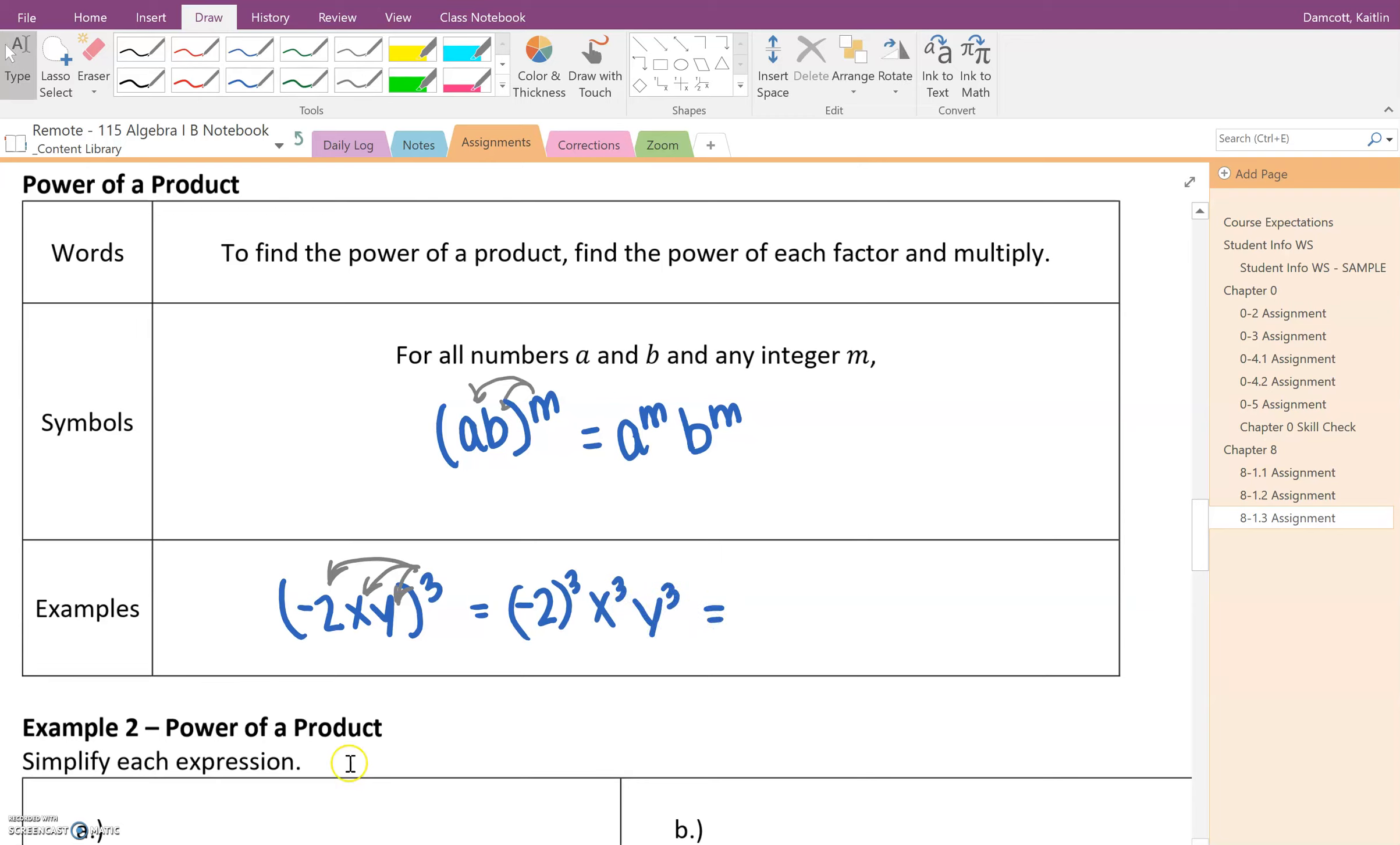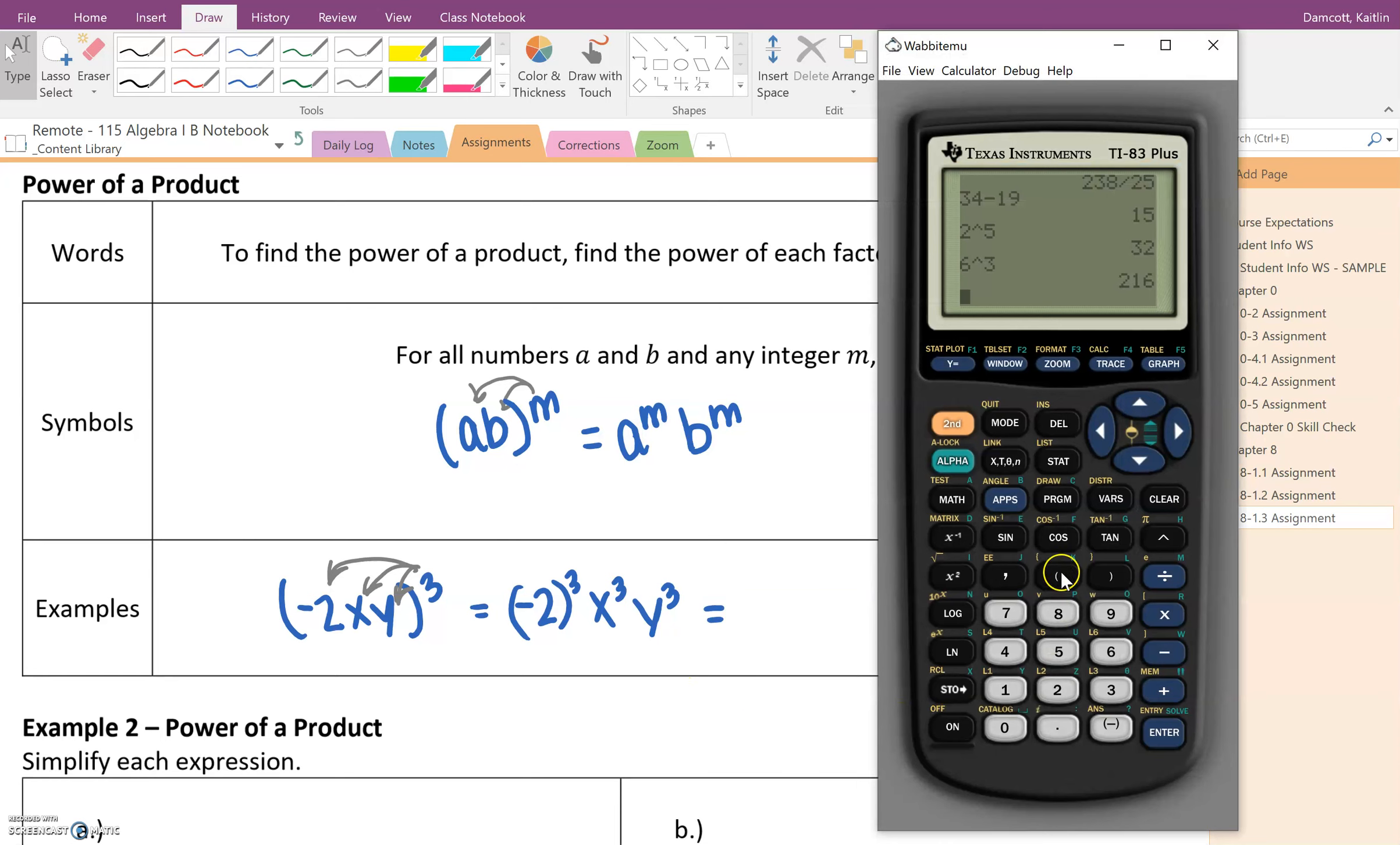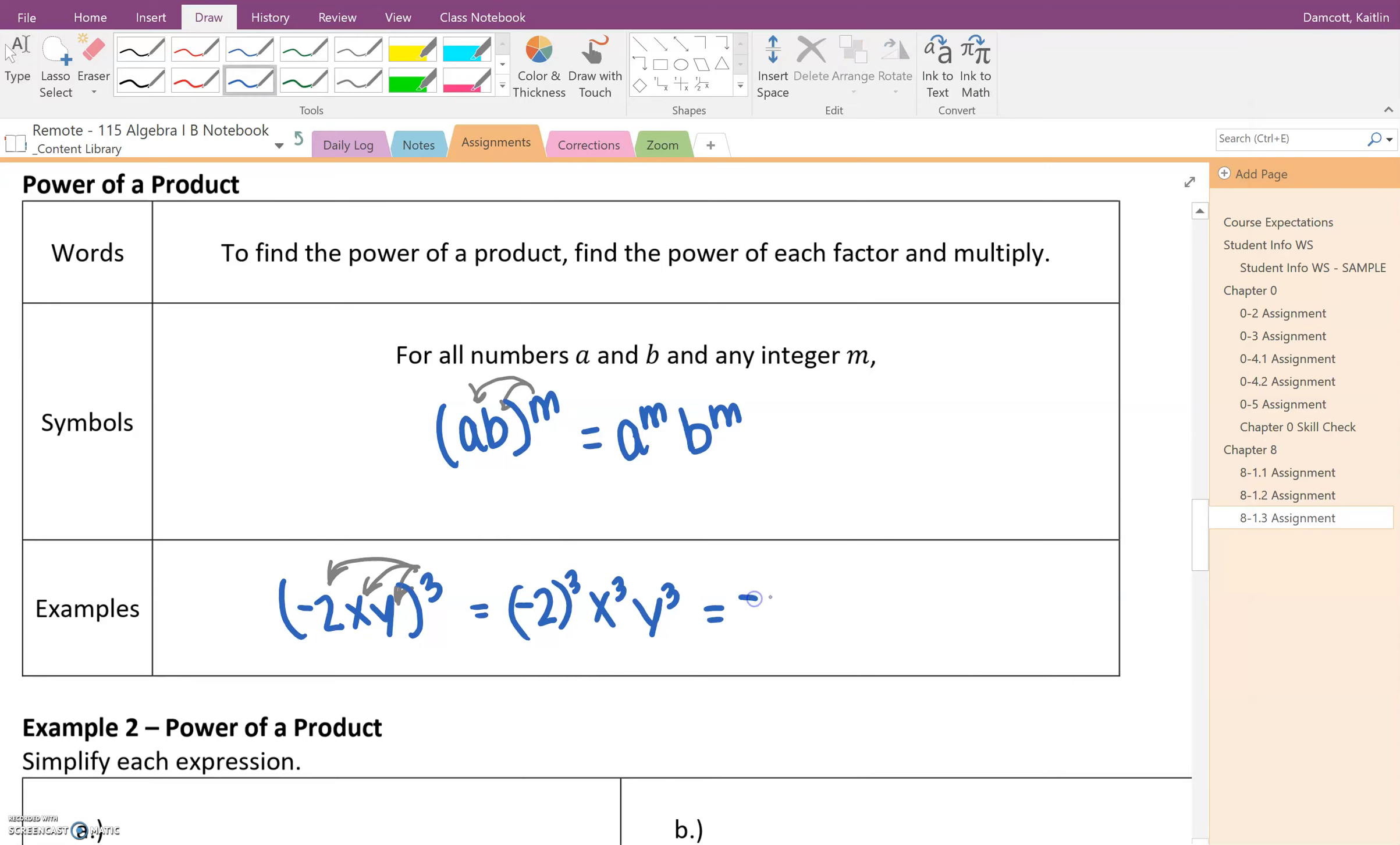Now we're almost there with our answer, but we need to make sure that we've got this so it's just a constant, like a number, a coefficient I guess would be more correct. So what I'm going to do is plug this into my calculator. You have to make sure that you put the -2 in parentheses and then cube it. We get -8. So -8x^3y^3 is the correct answer.